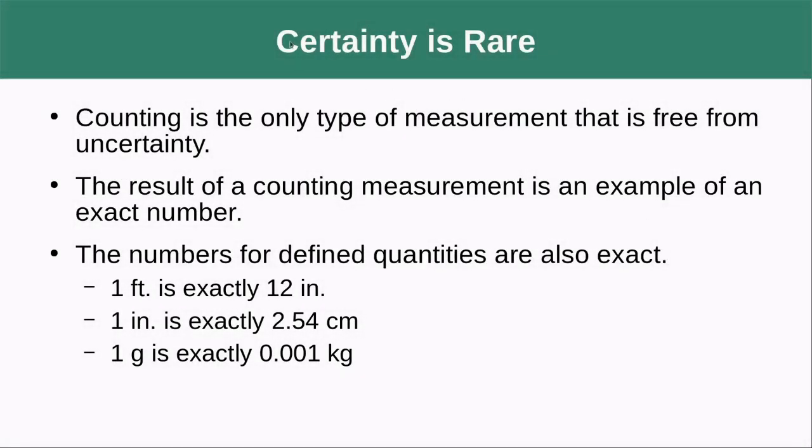Being absolutely certain of a value is actually a very rare thing, and the only way to actually do this is through counting. So you can say that there's one egg, two eggs, three eggs, but the second you start talking about how much mass of eggs you have, like how much weight of eggs, you know, like I have three pounds of eggs or something like that.